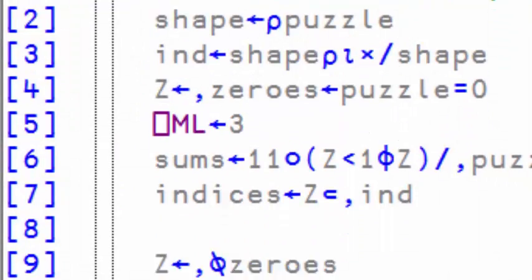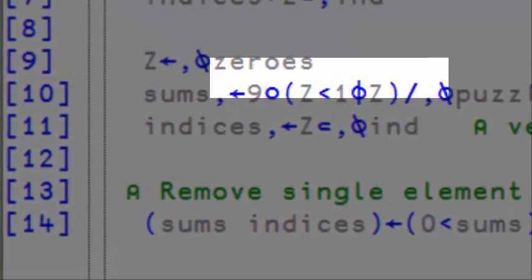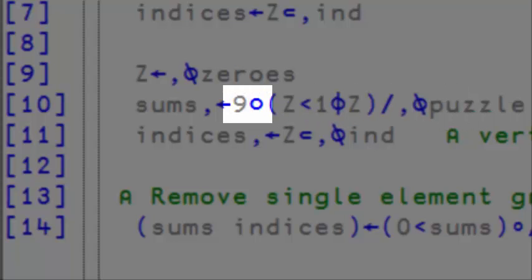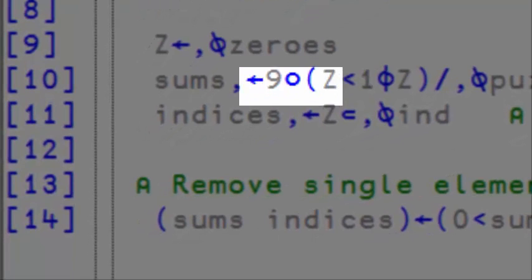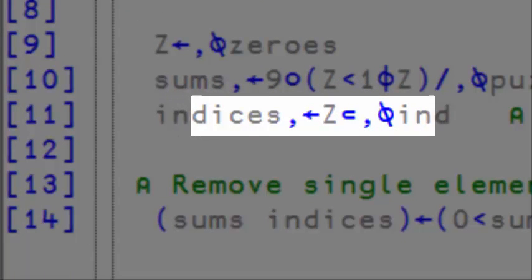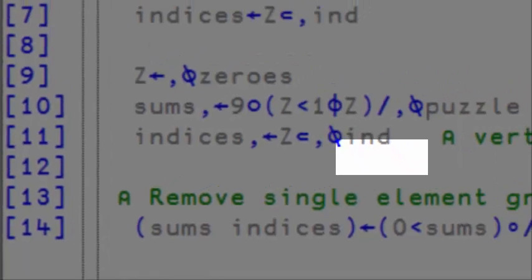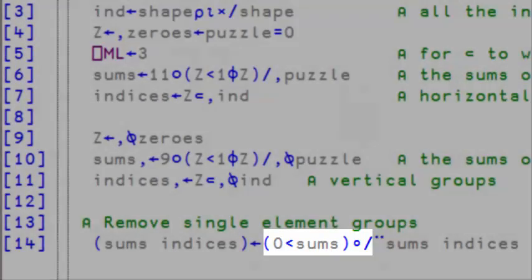For the vertical groups, I do the same. I simply transpose the matrix of zeros and do the same thing, except that I compress on the ravel of the transpose of puzzle, and that I use 9 circle instead of 11 circle to extract the real part. To extract the indices, I again use partition and close a la APL2, but this time on the transpose of the indices. In the end, I compress out any element whose sum is not positive. Et voila!